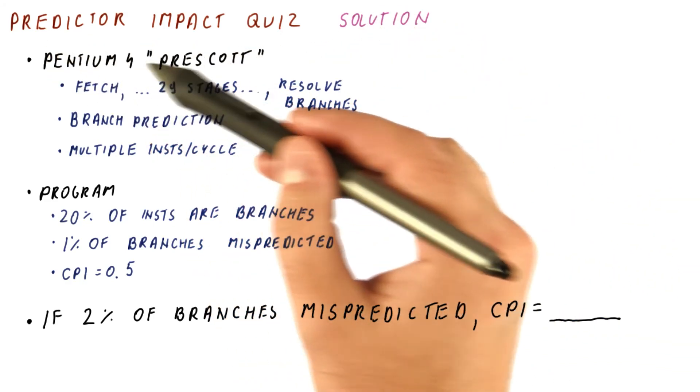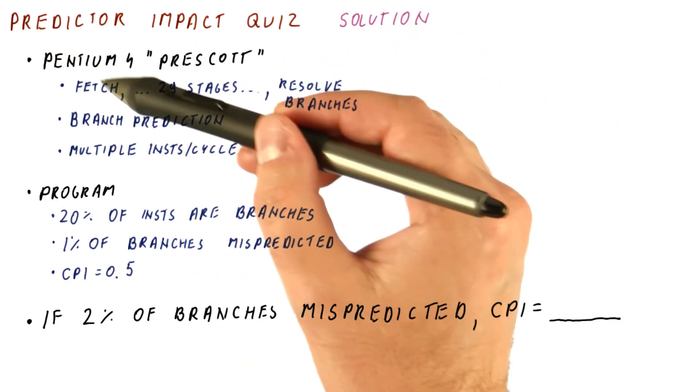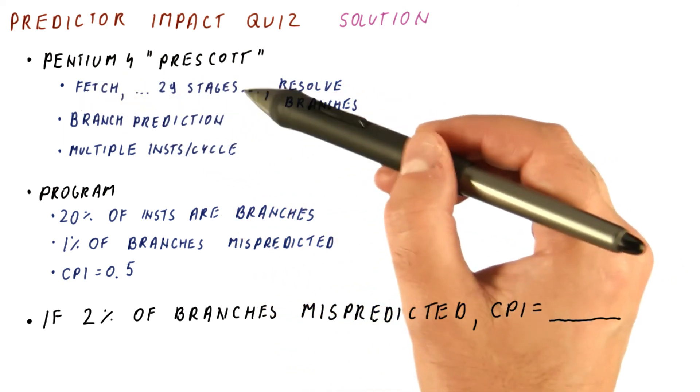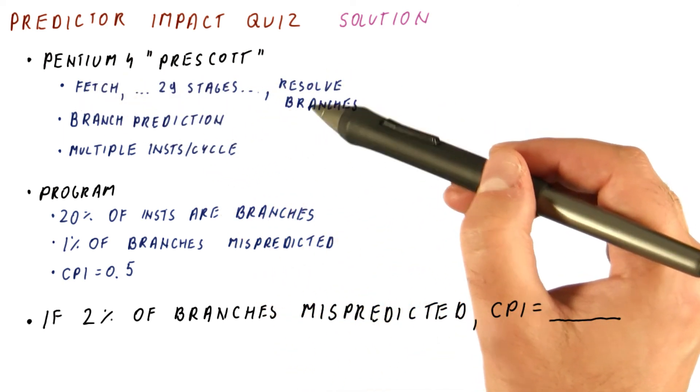Let's look at the solution to our predictor impact quiz where we consider the Intel Pentium 4 Prescott processor that spends 30 cycles until it finally resolves branches.